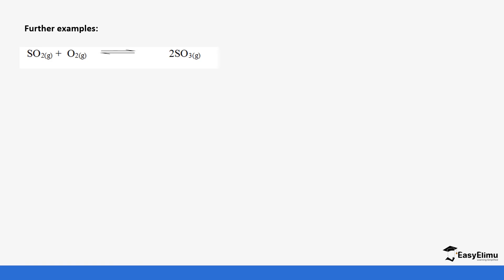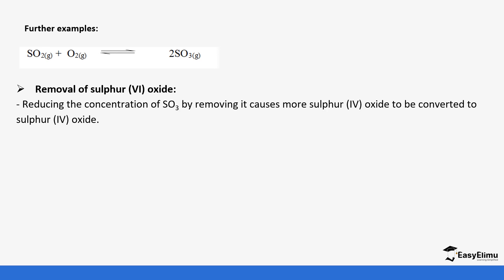Let's look at further examples involving changing the concentration by adding or removing reactants or products. If you remove sulfur trioxide (SO₃) from the equilibrium, it will cause the equilibrium to produce more of what has been removed, returning to its original equilibrium state. Reducing the concentration of SO₃ causes more SO₂ to be converted, so the forward reaction is favored. Similarly, addition of oxygen and SO₂ means we have more reactants, which need to react more to get rid of the excess, so the forward reaction is still favored.